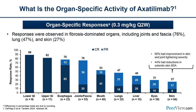Organ-specific response rates in the low-dose cohort showed responses across all organs. It was very encouraging to see responses in fibrosis-dominated organs, especially the lungs, which historically are very difficult to show substantial responses in. Skin responses were 27%, which is partly reflective of high NIH response criteria thresholds and the high proportion of patients with sclerotic disease. However, secondary measures suggest patient benefit — 66% had improvement in skin and joint tightening, and 44% had a reduction in the area of skin involved by sclerosis.